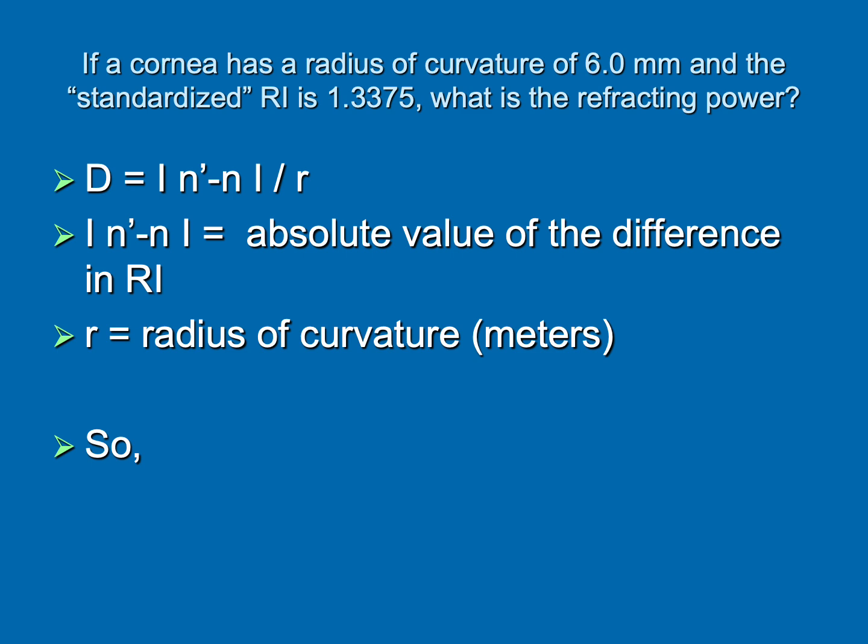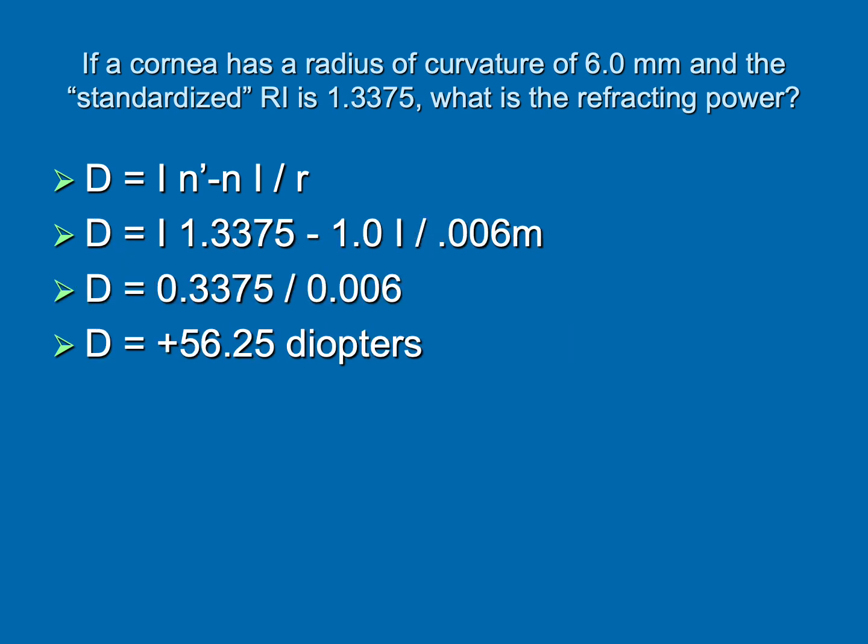We use this formula, where it's the absolute value of the difference in the refractive indices divided by the radius of curvature, which always has to be in meters. So let's plug in some numbers. Remember in this formula that N prime is what you're entering, and N without the prime symbol is what you're coming from. So we're entering cornea, 1.3375, and we're coming from air, which is 1. And so that gives us something that looks like a K reading. Maybe steep, but a K reading nonetheless.